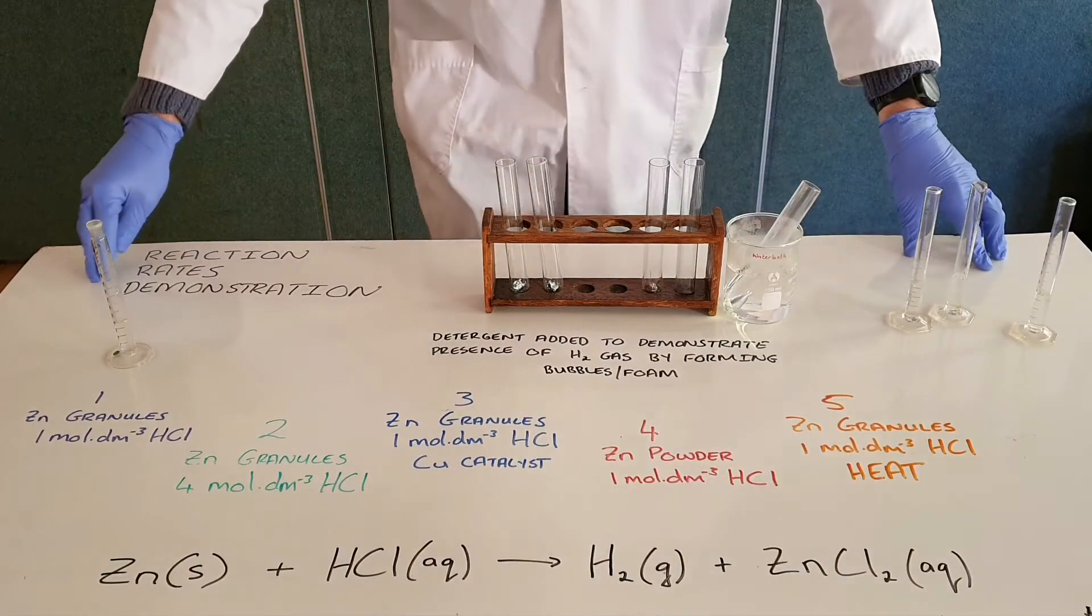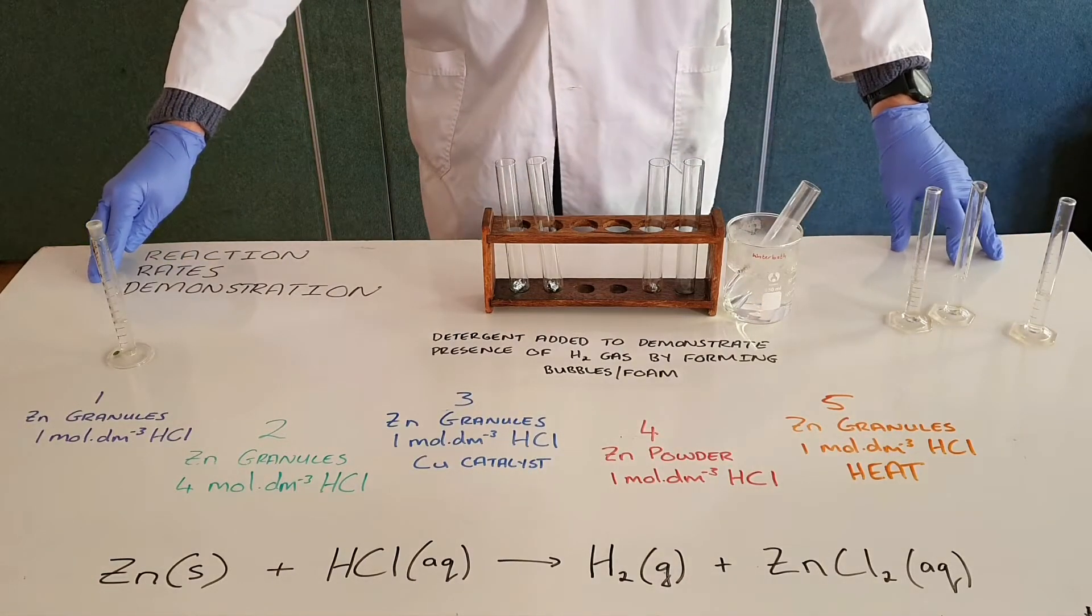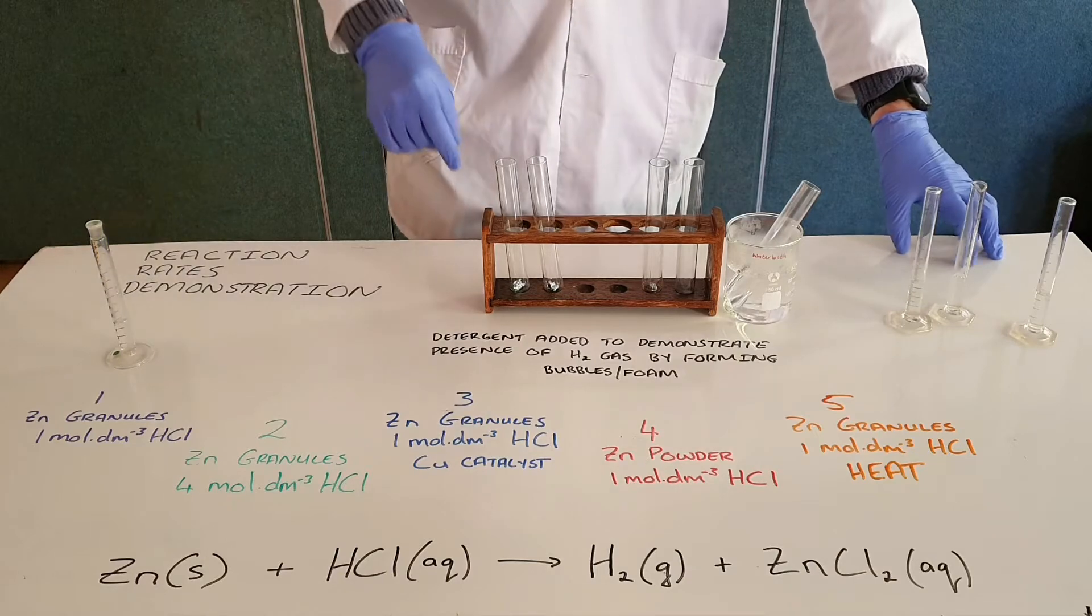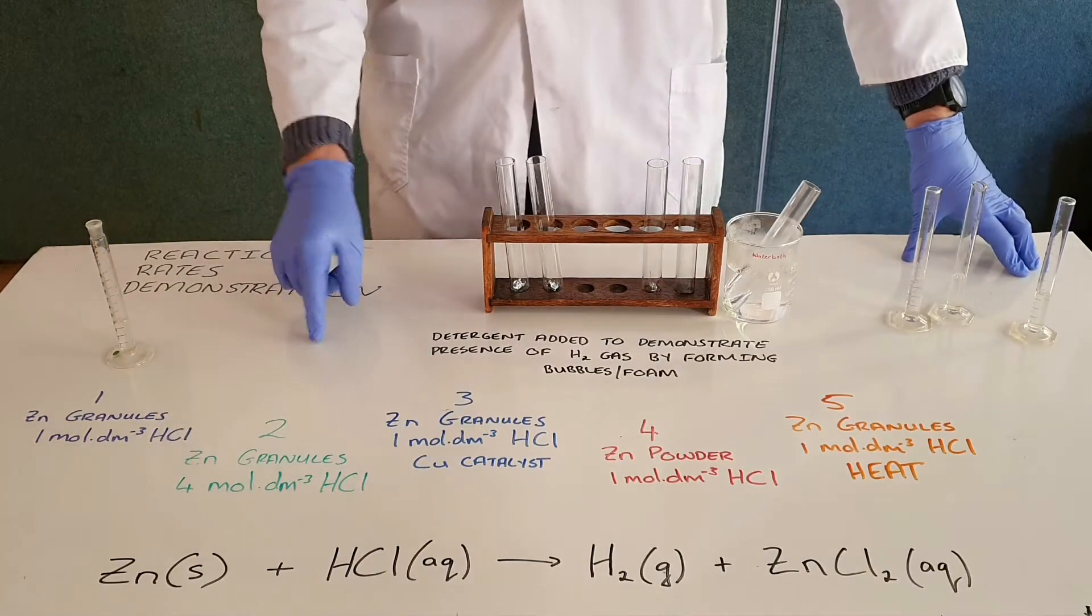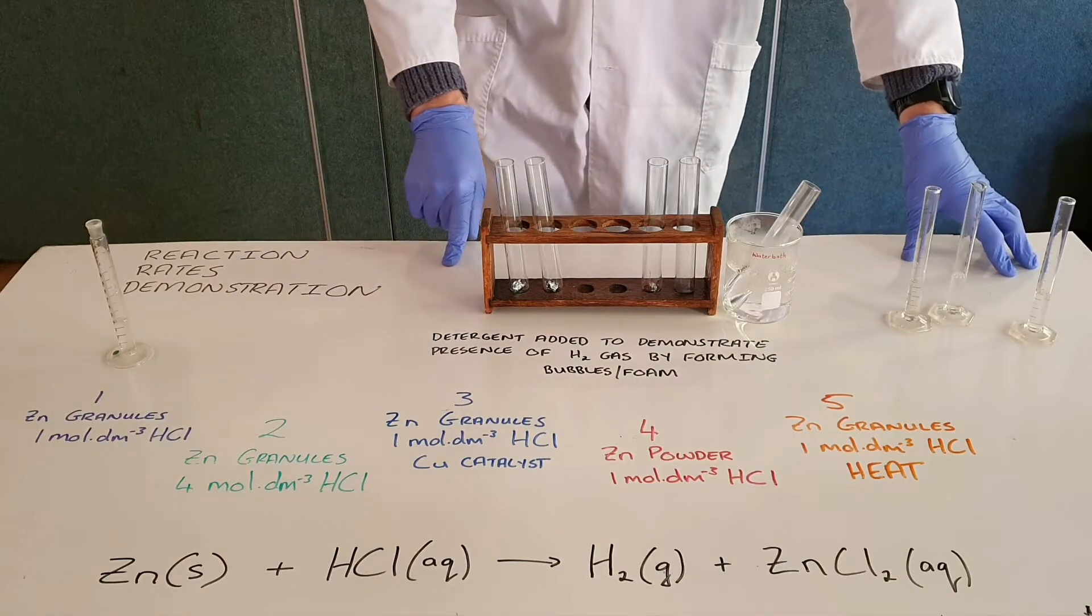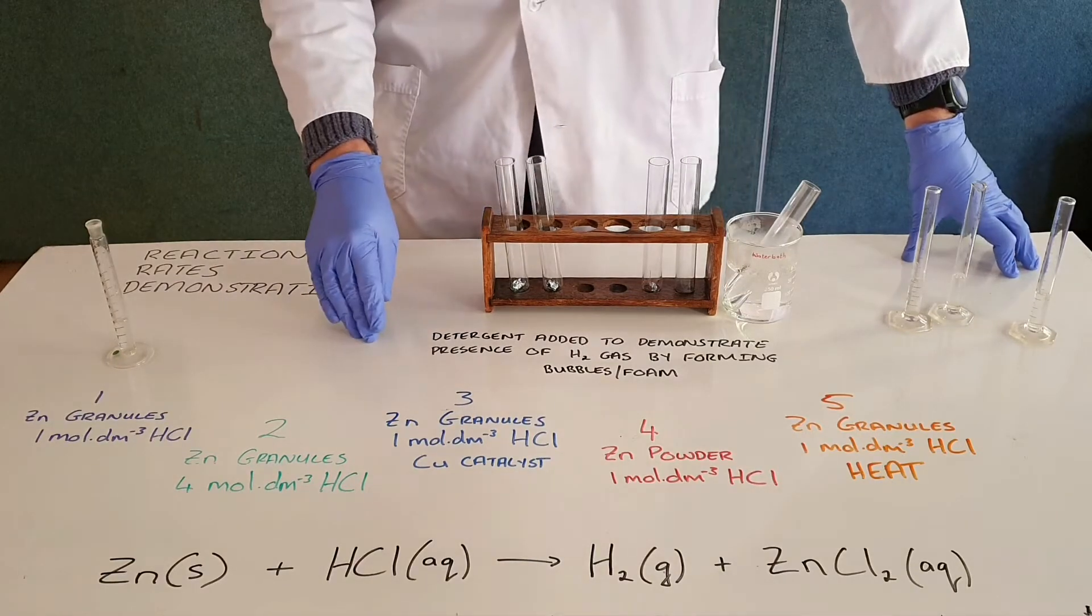We know from collision theory that there are various physical factors that can affect the rate of a reaction. We can demonstrate this with the reaction between zinc and hydrochloric acid by making a number of changes and observing the rate at which that reaction proceeds.